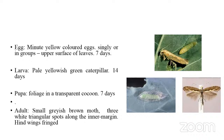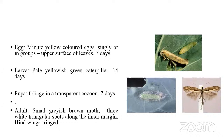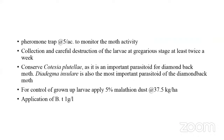The biology: eggs are minute, yellow, laid singly or in groups on the under surface of leaves. Eggs hatch in about seven days. The larva lasts about 14 days and is pale yellowish green in color. Pupation occurs on the foliage in a transparent cocoon. The pupal period is about seven days. The adult is a small grayish brown moth with three white triangular spots along the narrow wings, which appear as a diamond shape during rest — hence the name 'diamond back moth'. The hind wings have fringes of long fine hairs.